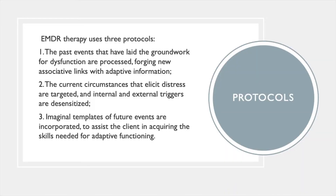EMDR therapy uses three protocols. First, the past events that have laid the groundwork for dysfunction are processed, forging new associative links with adaptive information. Second, the current circumstances that elicit distress are targeted, and internal and external triggers are desensitized. Third, imaginal templates of future events are incorporated to assist the client in acquiring the skills needed for adaptive functioning.